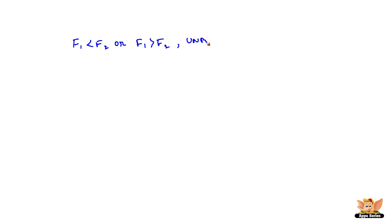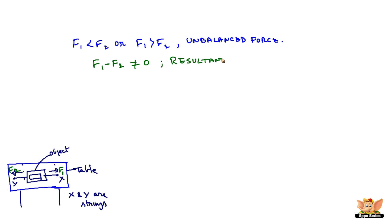Then it is called unbalanced force. It means the resultant force, F1 minus F2, is not equal to zero. The resultant force on the object is not zero.